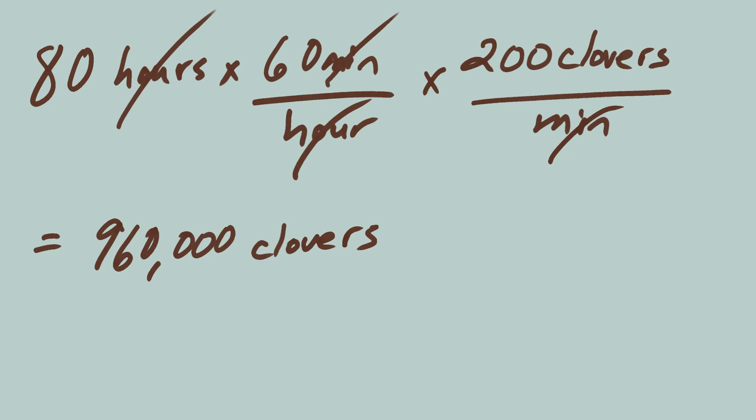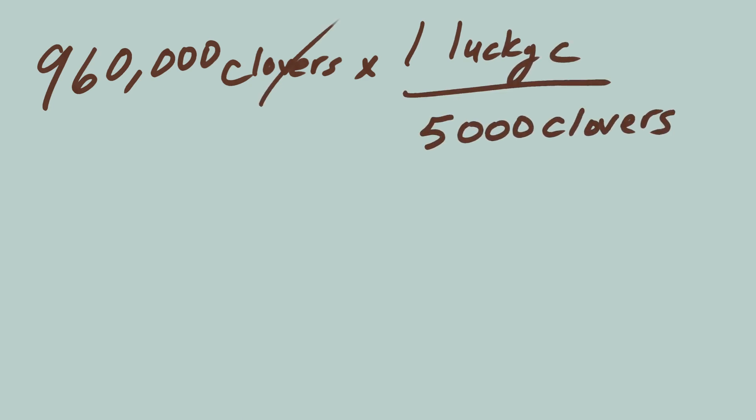What a slowpoke. Just kidding. That's a lot of clovers. Now, let's see how many of those are probably lucky. 960,000 clovers times 1 lucky clover per 5,000 clovers, which equals 192 exactly. No rounding needed. He gets 192 points.